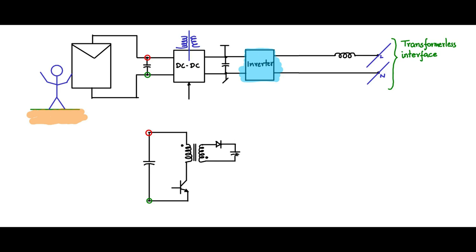The connection points of the flyback output capacitor correspond to the DC bus nodes of the inverter. In this way, the isolation has been shifted to the high-frequency point within the DC-DC converter, making the whole system more compact since high-frequency transformers are very compact.